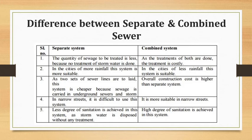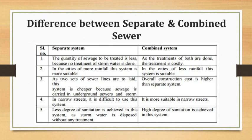Regarding stormwater pollution, in the separate system there is no question of pollution of stormwater as sewage and stormwater are transported separately. In the combined system, stormwater is unnecessarily polluted as it is mixed with sewage. Regarding the financial aspect, the separate system is used when sufficient funds are not available at the beginning, while the combined system is used when sufficient funds are available.